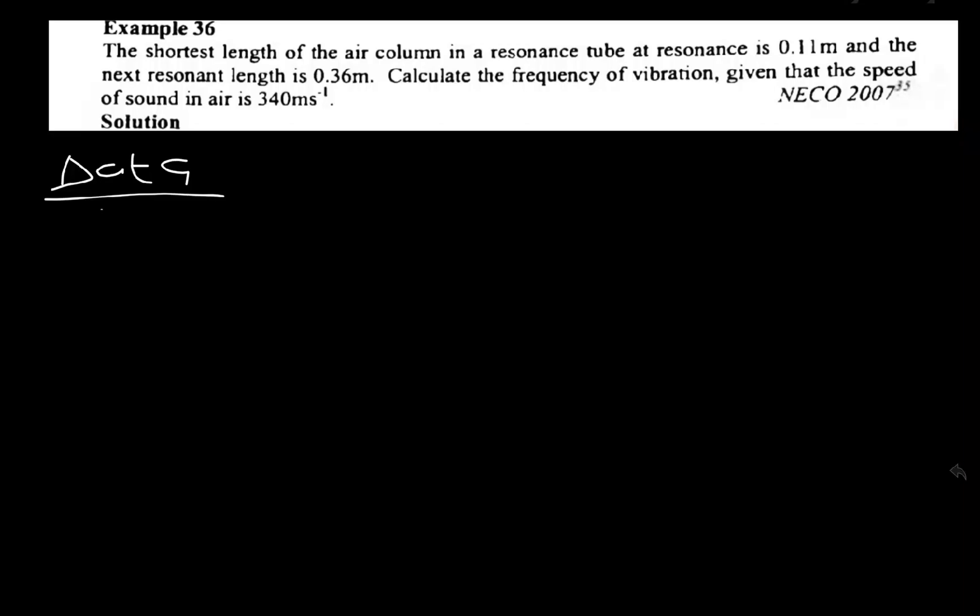You might come across this in your forthcoming exam. Here is exactly how to crack it. This is a sample from Soundwave. The shortest length of air column in a resonance tube at resonance is 0.11 meters. That becomes the first resonance.